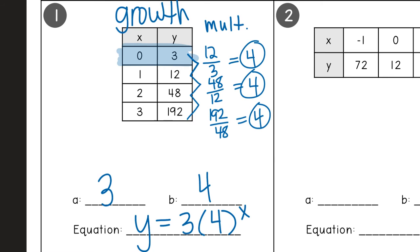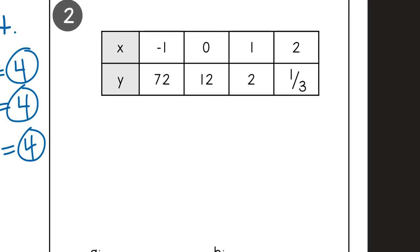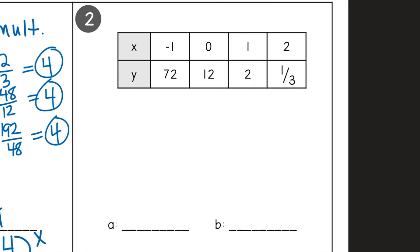Okay, example two. Still a table — this time it's just sideways. But either way it's going to be the same thing. First thing I want to look for is the y-intercept, so I'm going to look for where x equals 0, and that is right here. So that means my A value is going to be 12.